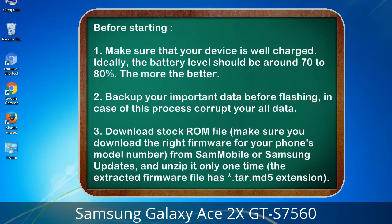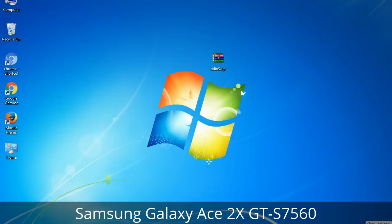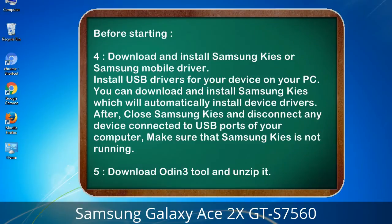Before starting: 1. Make sure that your device is well charged. Ideally, the battery level should be around 70 to 80% — the more the better. 2. Back up your important data before flashing, in case this process corrupts your data. 3. Download the stock ROM file. Make sure you download the right firmware for your phone's model number from Sammobile or Samsung Updates, and unzip it only one time. The extracted firmware file has a .tar.md5 extension.